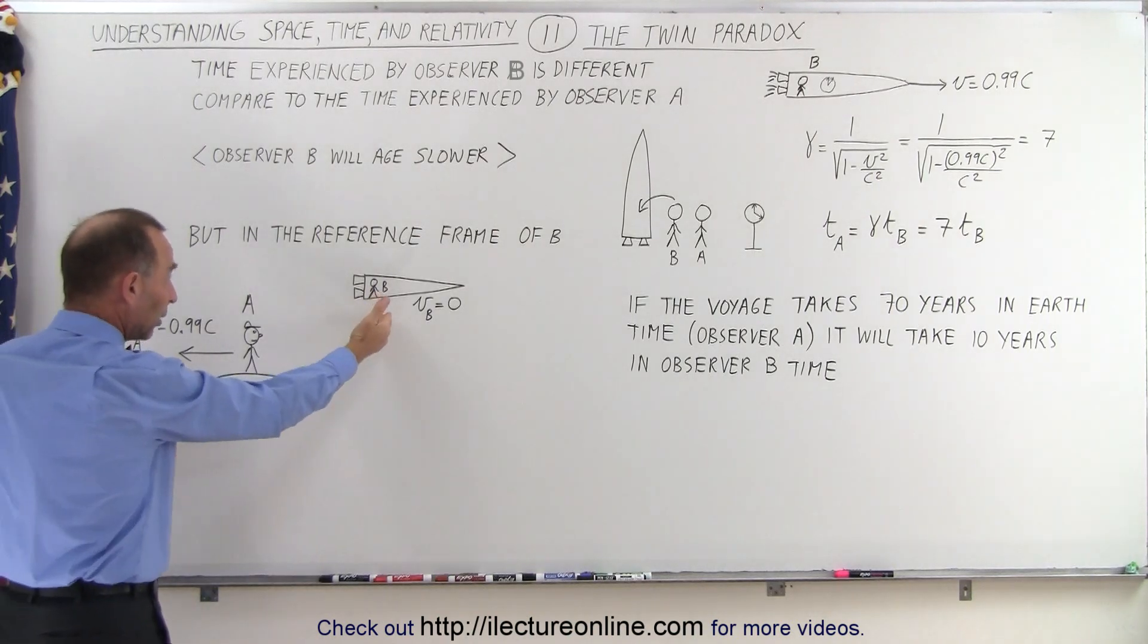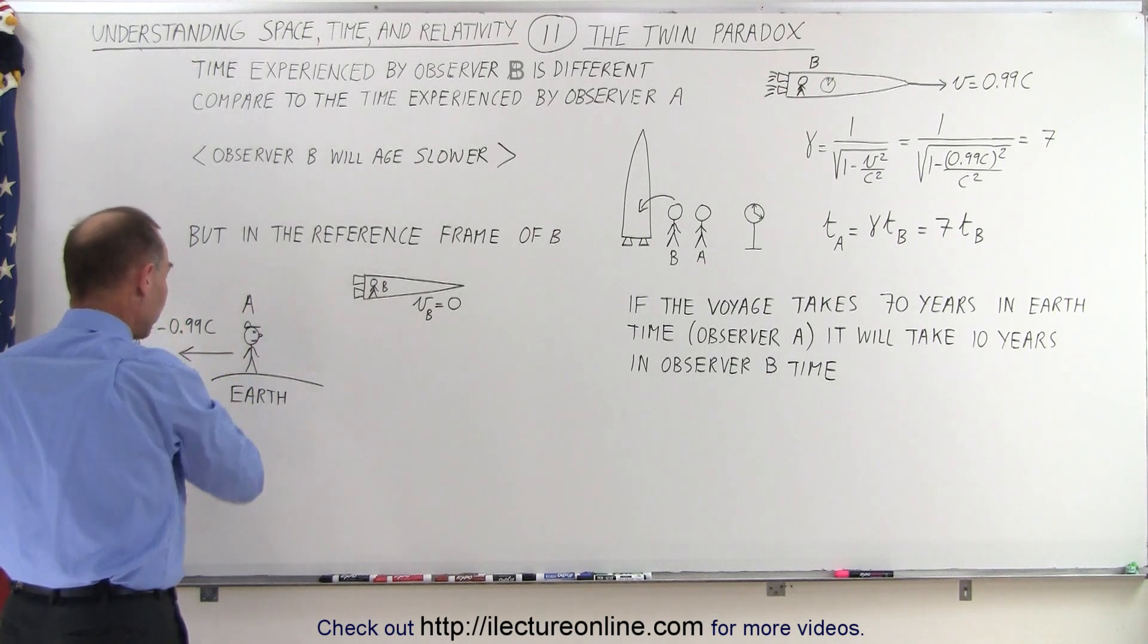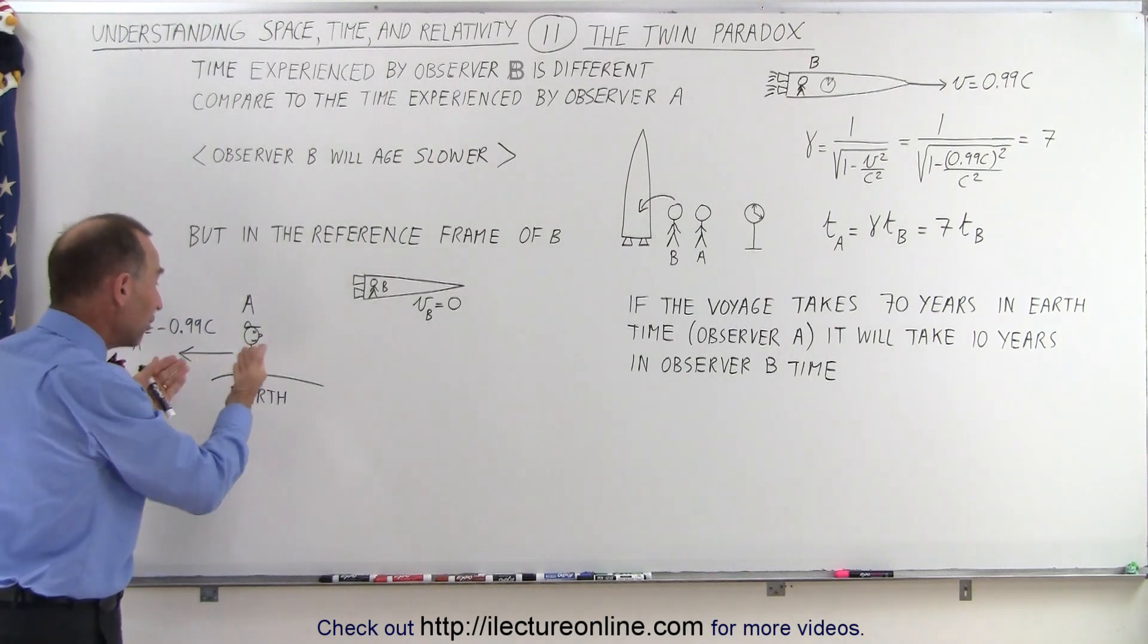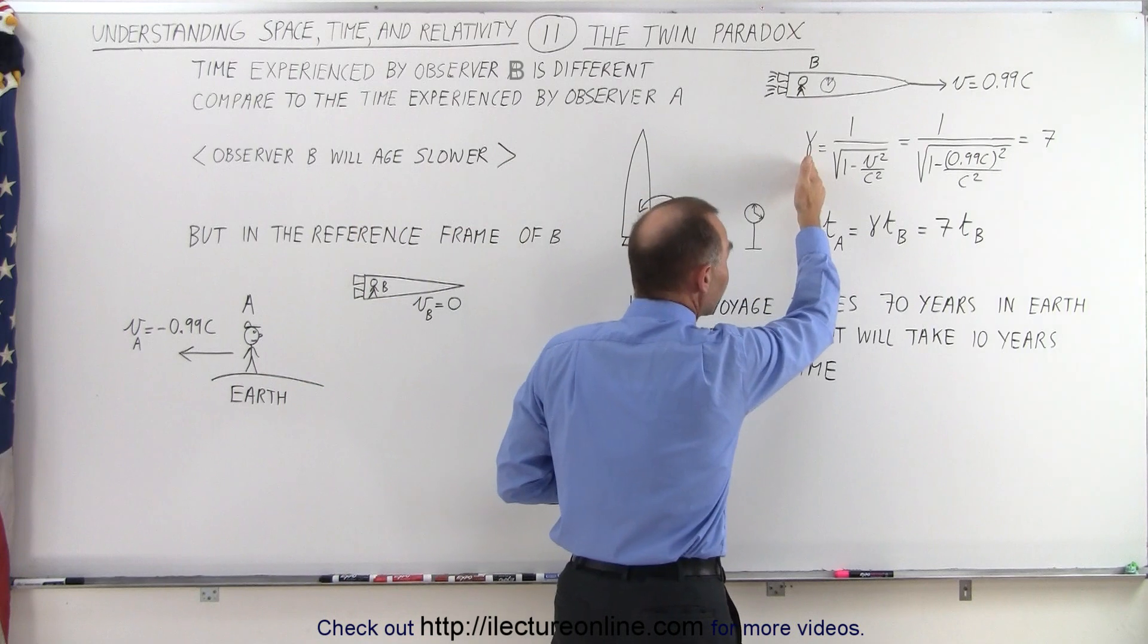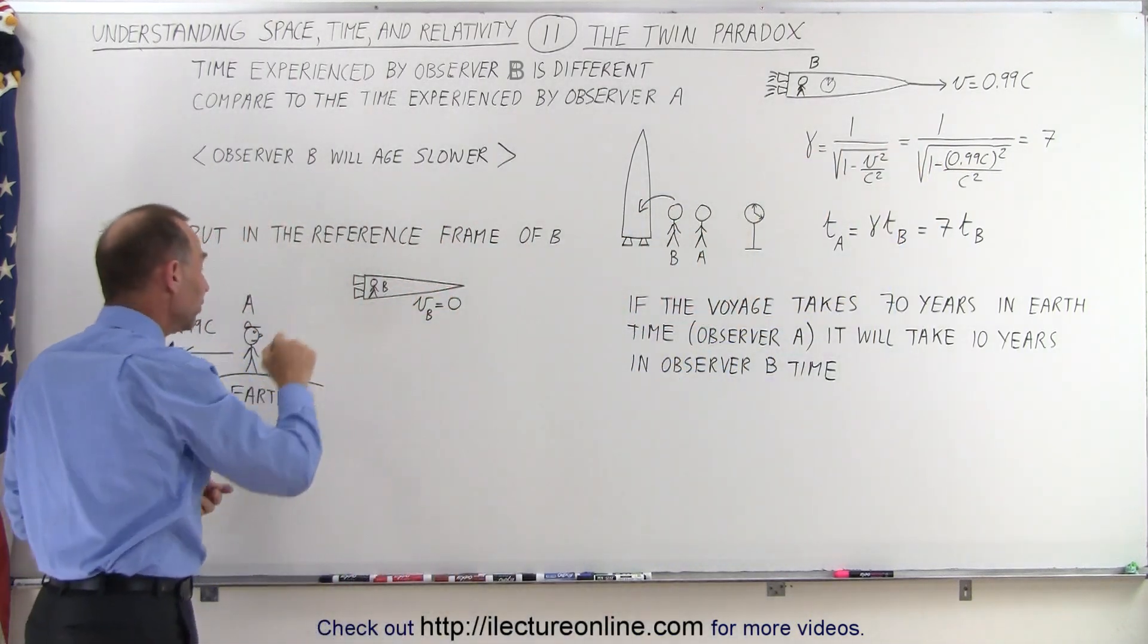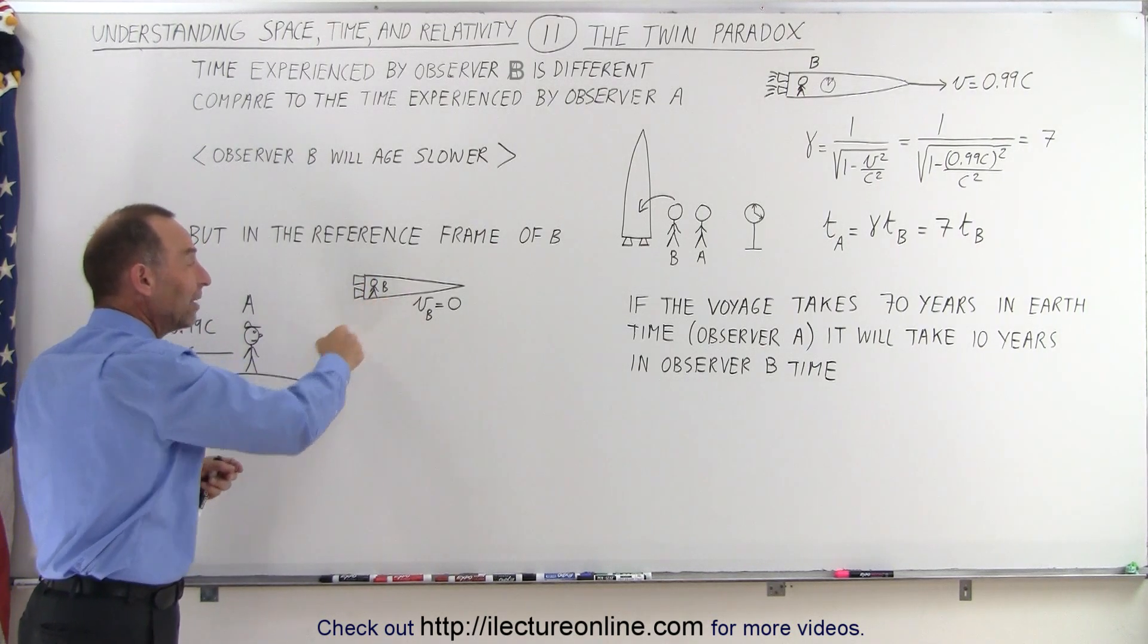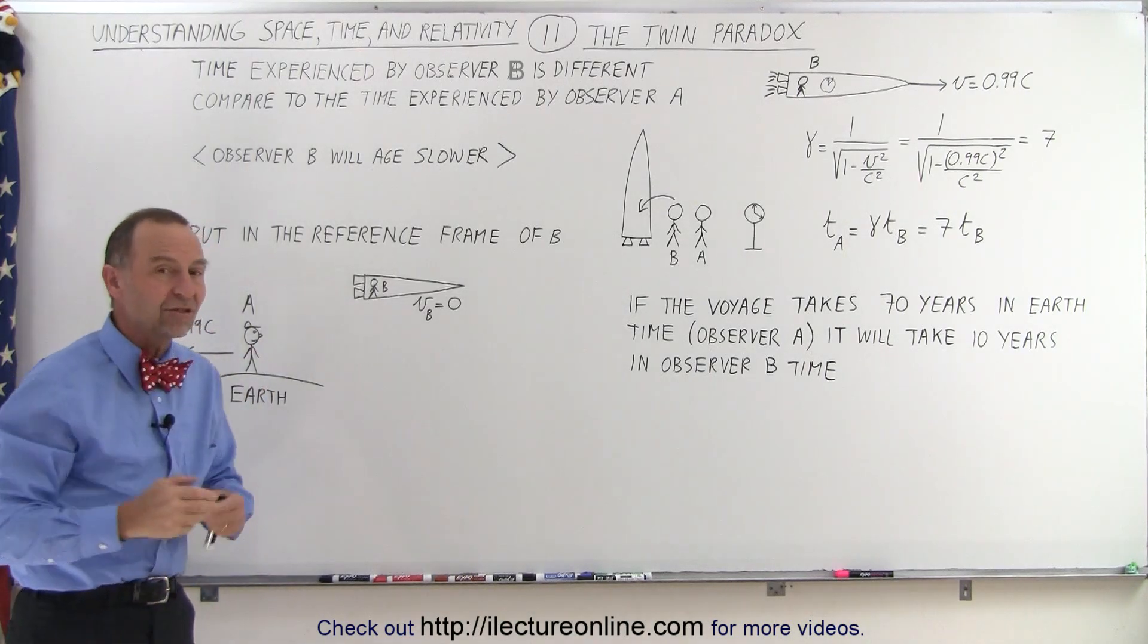So observer B can argue, I was stationary. I saw the Earth and observer A moving backwards at 0.99C. Therefore, time is very different for A than it is for B. And since A is moving so fast, when we calculate the Lorentz factor for A, it would be 7 relative to B. And therefore, B would say, the time is much slower for A than here. My time will, I will age 70 years when I'm gone for 70 years, and everybody on Earth will have only aged 10 years.